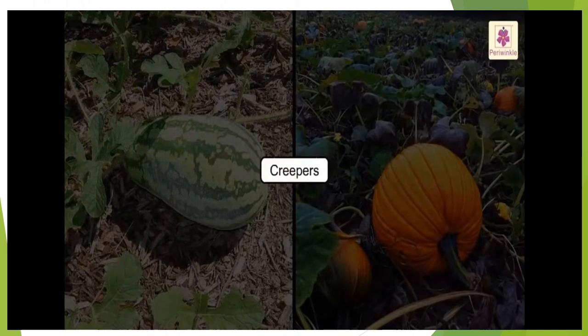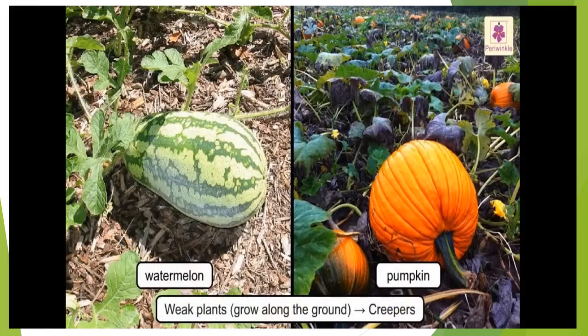Now, which one is left? Yes, it's creepers. Some plants with weak stems grow along the ground, around another plant, or up a wall — such plants are called creepers. For example, watermelon, pumpkin, sweet potato, musk melon, etc.